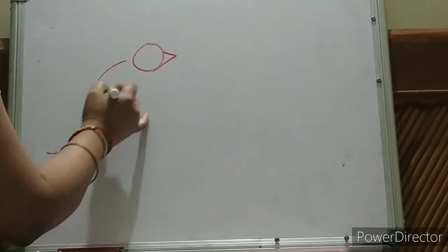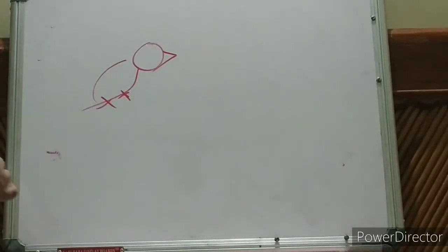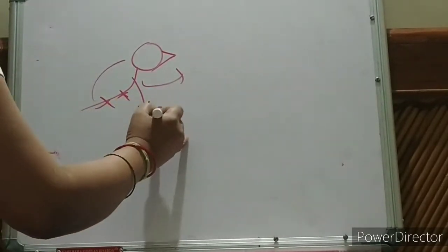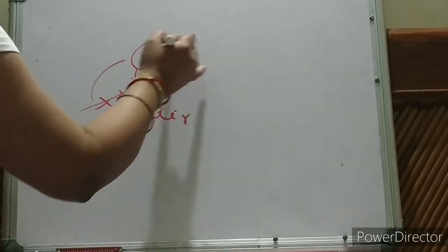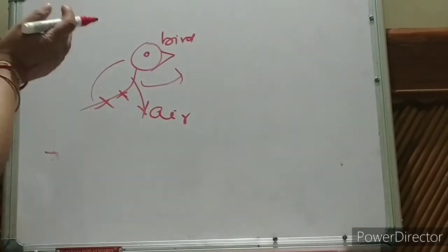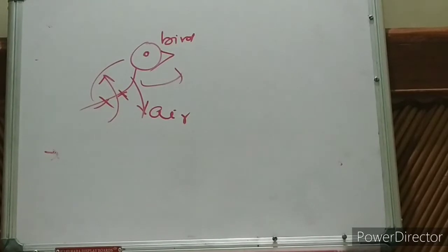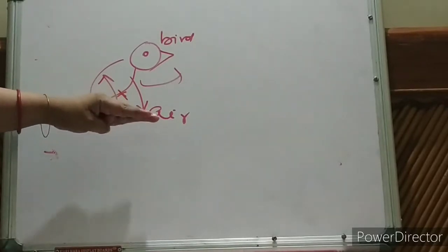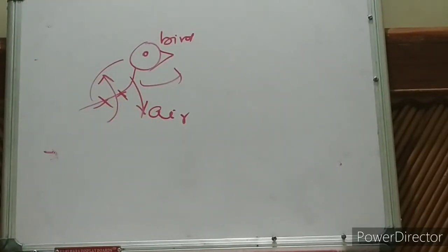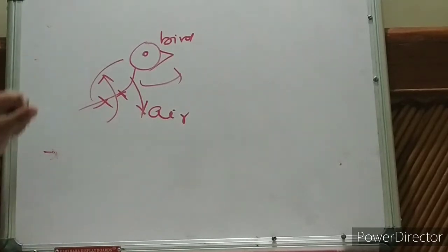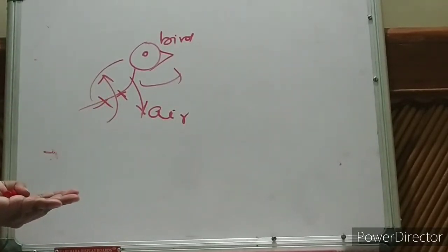Now I will start with the example of a bird. When this bird flies, it will apply force on air. The bird will apply force on air, and this air will apply a force on the bird also. The bird pushes the air in a downward direction, and the air pushes the bird in an upward direction. This is an action-reaction pair — these are the two forces in pairs that Newton's third law is talking about.